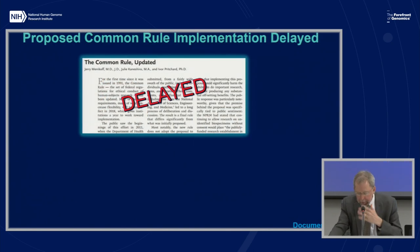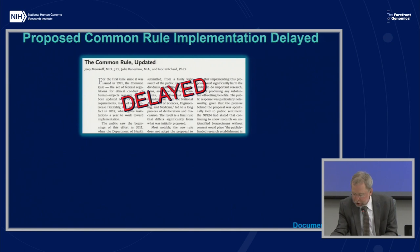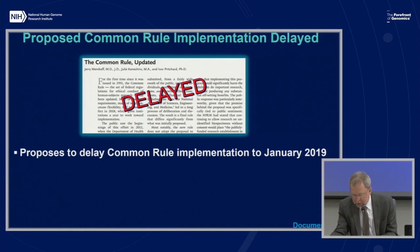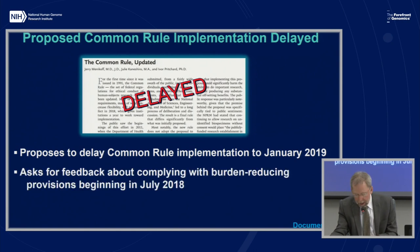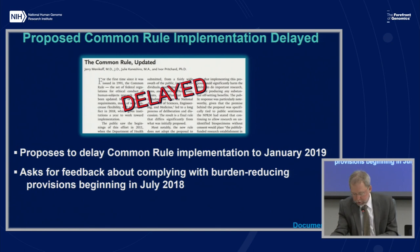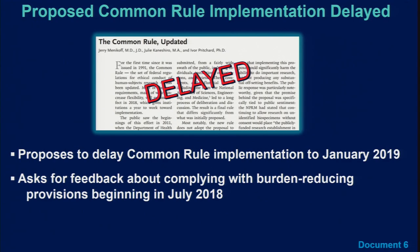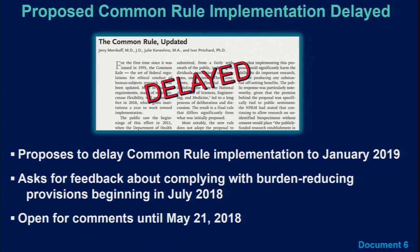In terms of relevant policy developments, an interim final rule was previously issued to delay implementation of the revised Common Rule from January to July of this year. The Common Rule agencies have now issued a Notice of Proposed Rulemaking, or NPRM, that proposes an additional six-month delay, meaning the revised Common Rule would be implemented in January 2019. The NPRM is asking for feedback on three burden-reducing provisions: the updated definition of research under which certain activities are no longer considered research; the provision that no longer requires annual review for some types of research; and the provision that eliminates the requirement that grant applications undergo institutional review board review and approval. The NPRM is open for comments until May 21st.